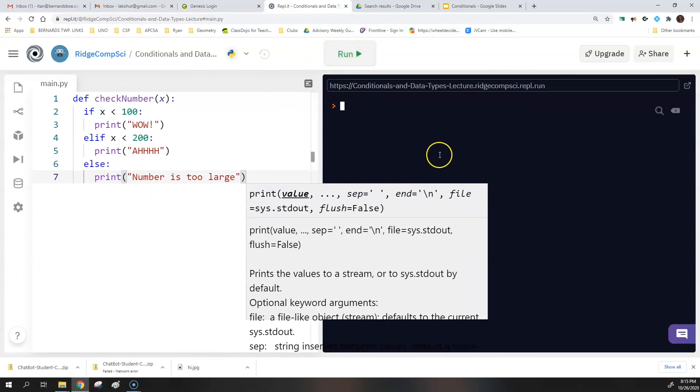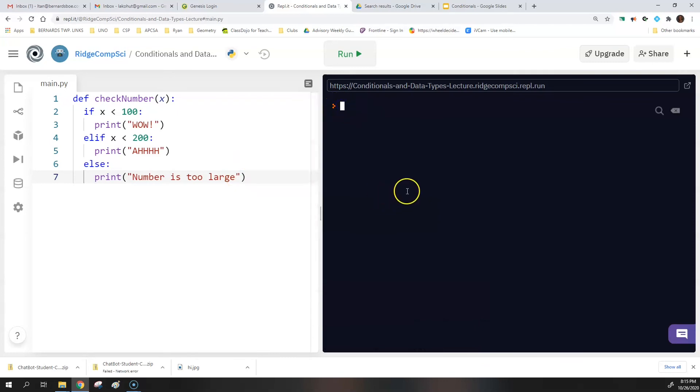Now I need to compile this, so run it. And then I'm going to call the function. So check number. Let's try checking 150. So this should give us ah, that print. And that's because X is not less than a hundred, but it is less than 200. Now let's try 200. So here it's going to say, if it's not less than 200, if it is 200, it's going to go to that else. And that's going to say number is too large. Now you can do like negative value here, like negative 100. And that's going to say wow because I'm not checking if it's negative or not.